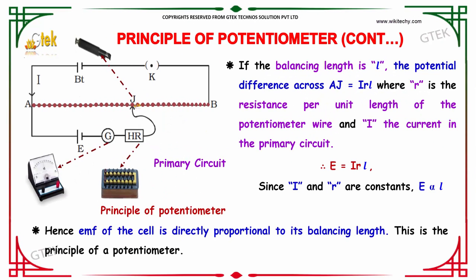If the balancing length is L, the potential difference AJ is equal to I, the current, into R, the resistance, and L. Where R is the resistance per unit length of the potentiometer and I is the current. So we will be getting E is equal to I into R into L.